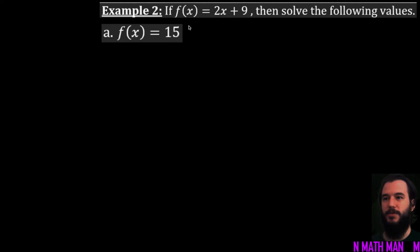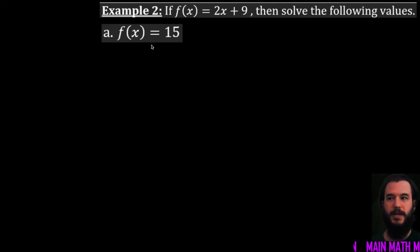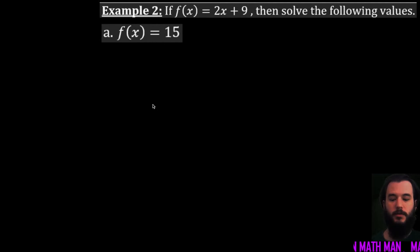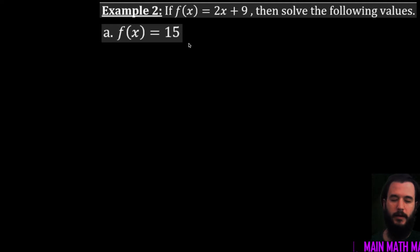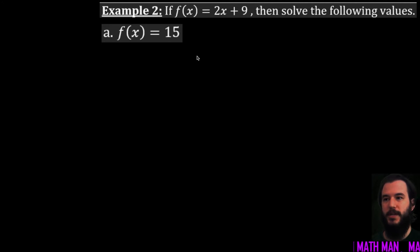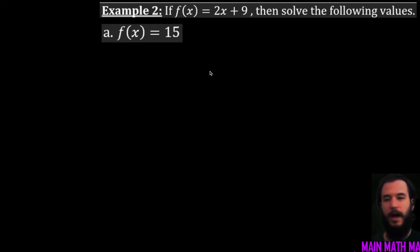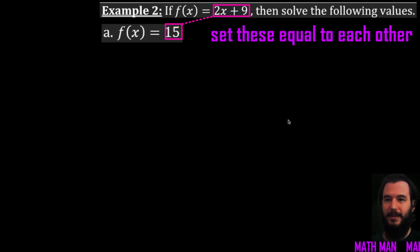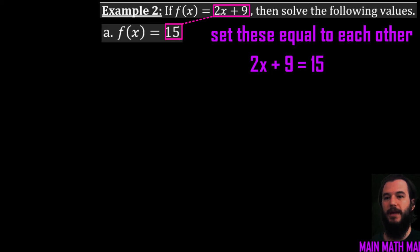In example two it says: if f of x is equal to 2x plus 9, solve for the following values. We're given that our function equals 15 — what value do I need for x for my function to be 15? Using the oven analogy: I went to someone's house, had some great enchiladas, and they asked 'what's inside, how did you make them?' That's what we're figuring out. We set 2x plus 9 equal to 15 and solve.